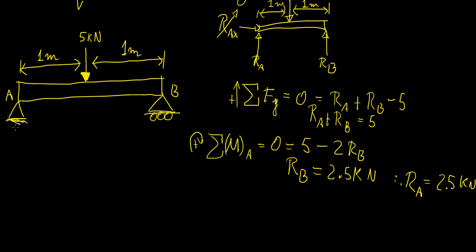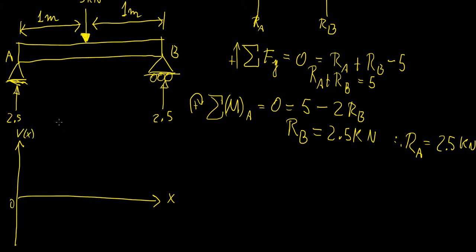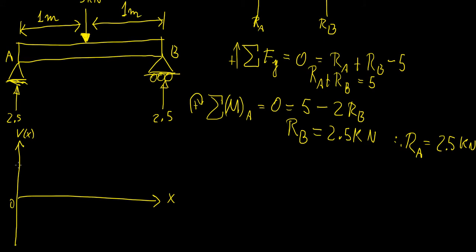Now to compute the shear force diagram, we note that the free body diagram has a reaction of 2.5 kN at A. I'm going to draw the shear force diagram right beneath the free body diagram with a set of axes: horizontal axis x (distance from support A in meters) and vertical axis showing shear force (kilonewtons). Because we only have point loads, we're going to have a constant shear force throughout each segment of the structure.